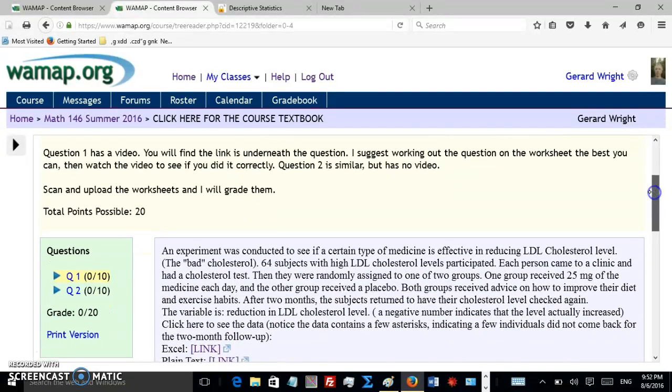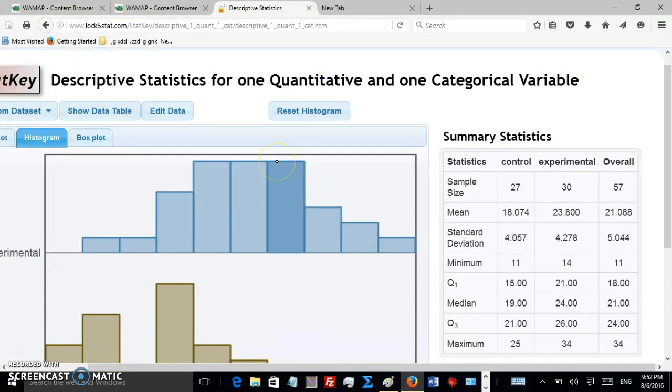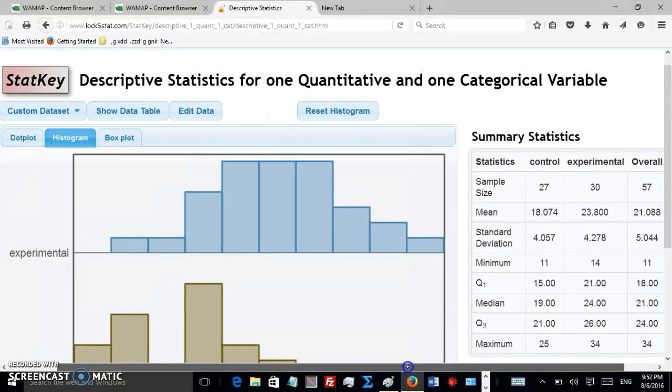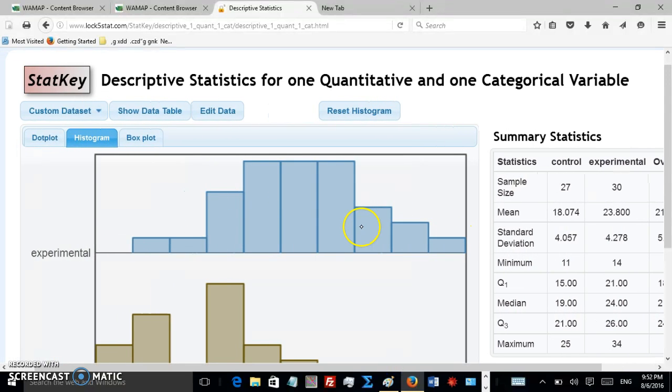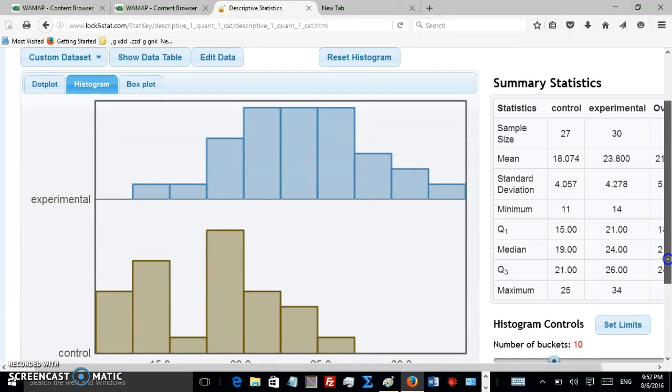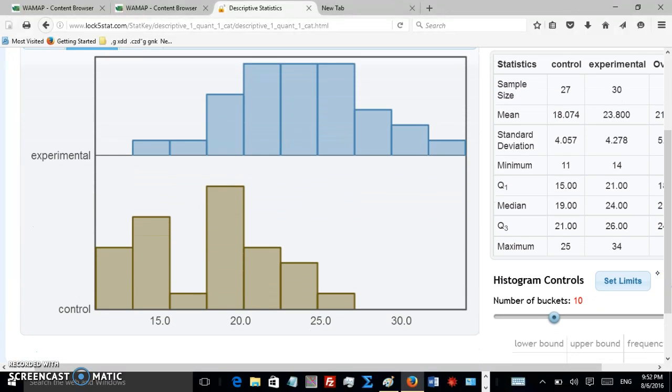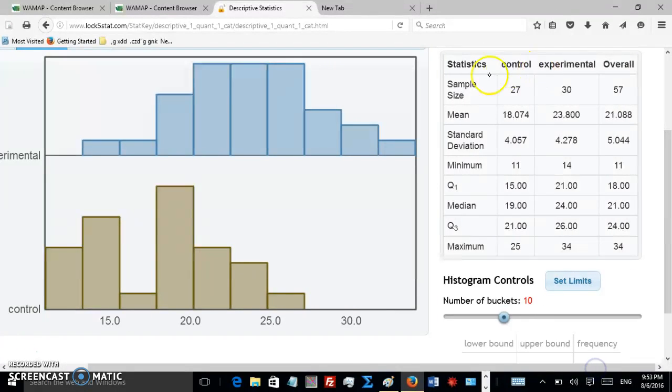I just went to Lock5Stats. I copied and pasted the data. Let me just go through here. Here's the results right here. So here's the histograms of the two groups. The experimental group is on top. It's a unimodal symmetric curve. And also the control group, it's not quite unimodal symmetric but it's fairly close. There's a little bit of a gap but otherwise it's fairly normal looking. And then the summary statistics are here on the right.